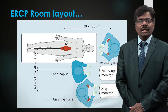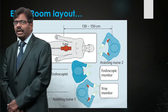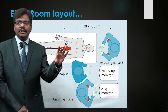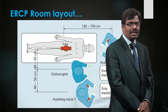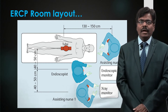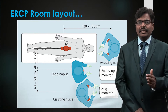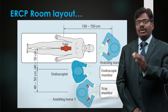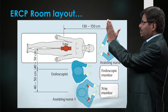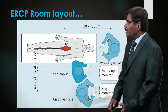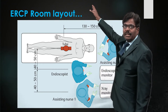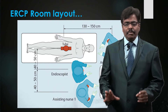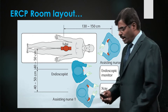Here is the room layout: the patient is ideally supine, prone, or in left lateral position on a radiolucent table. The anesthetist stays on the patient's head side, the endoscopist is myself, and my staff nurse on my right has the accessories trolley. Both the endoscopy monitor and X-ray monitor are placed ergonomically next to each other so I can view both simultaneously. The C-arm comes from the other side without interfering.